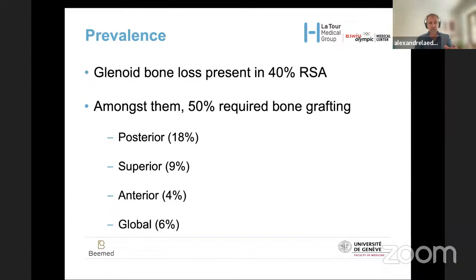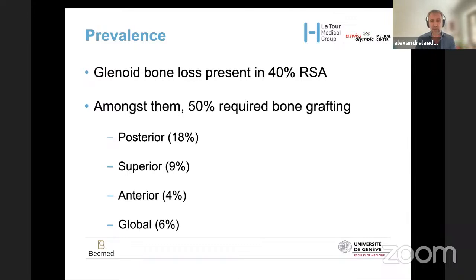The prevalence of bone loss is present in 40% of reverse shoulder arthroplasty — a very high prevalence. Around 50% of these cases will require some kind of bone grafting or metallic augmentation. The bone loss is posterior in around 20% of cases, superior in around 10%, anterior in about 5%, and few cases are global — mainly encountered in revision surgery.